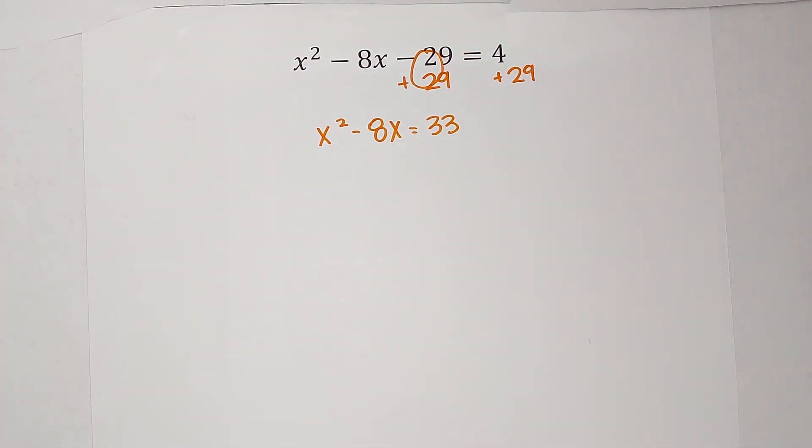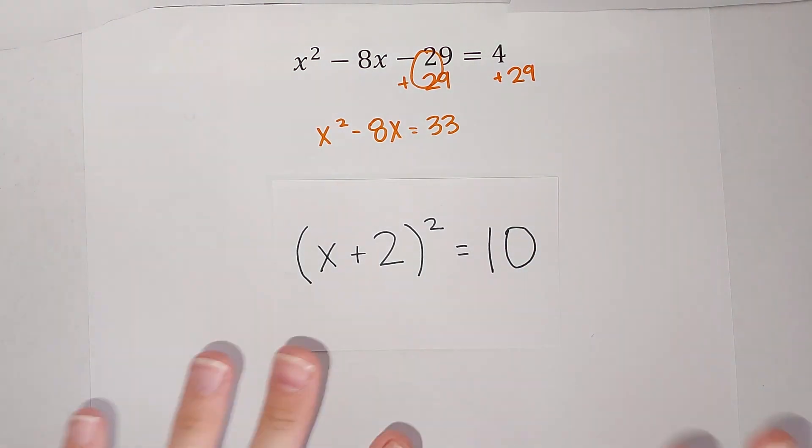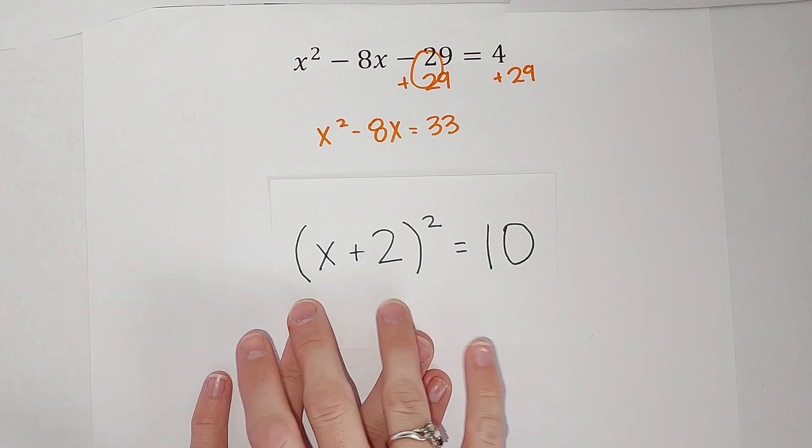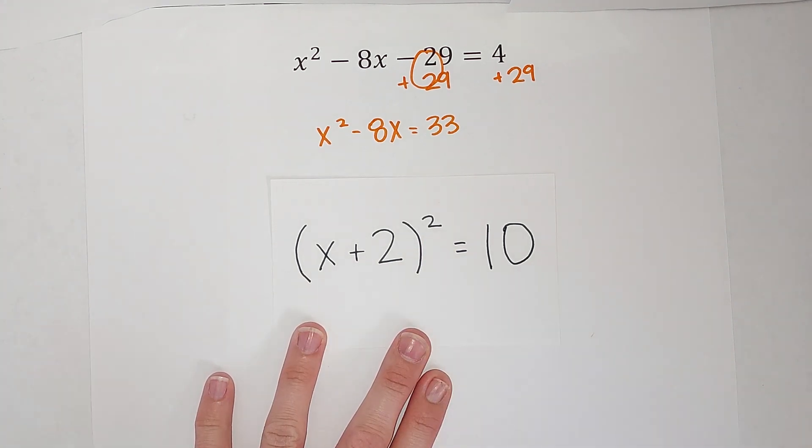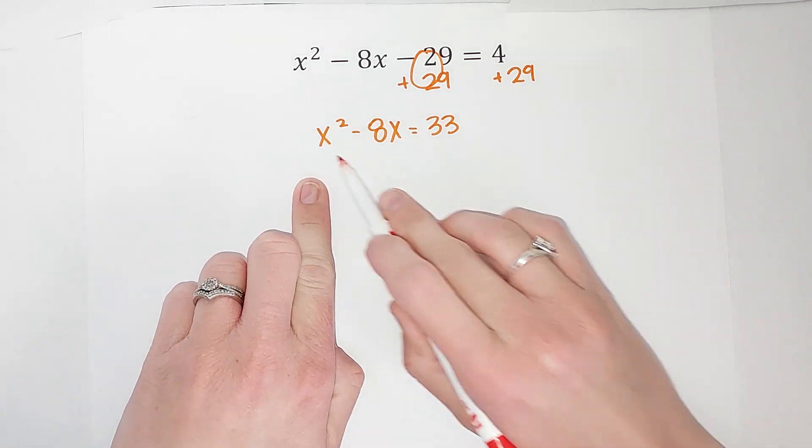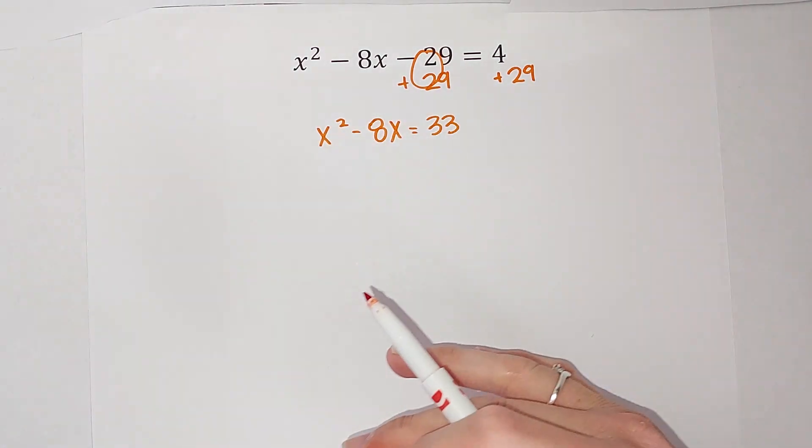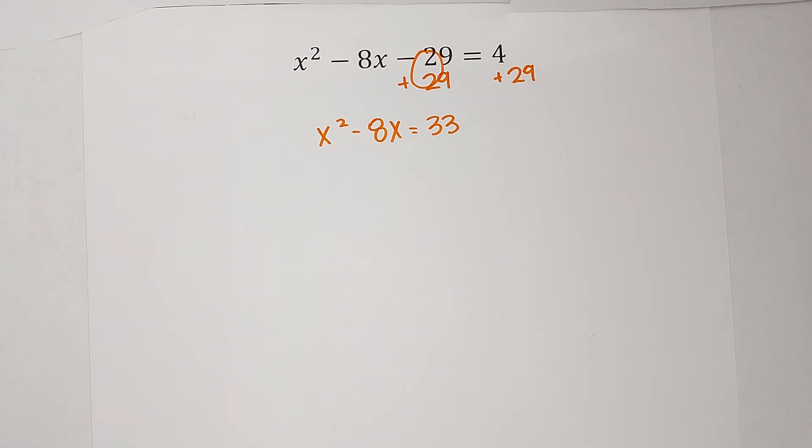Now completing the square, my whole goal is to end up with something that looks kind of like this - a set of parentheses squared equal to something. So what I need to do is figure out what number I can add to this side to make it so it factors to a parentheses squared.